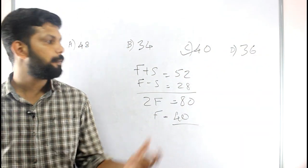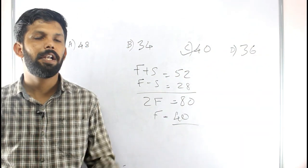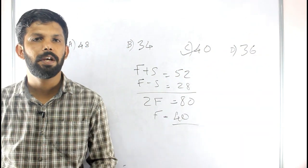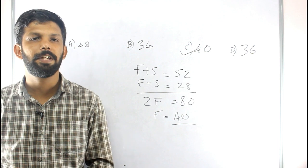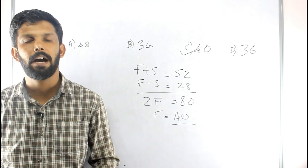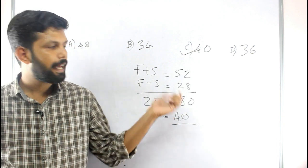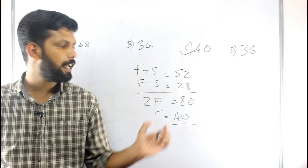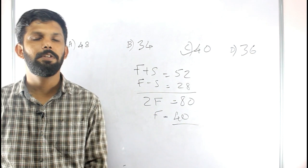The age of the father is 40, option C. As you can see, we have a very simple formula for age problems. If we have the same type of formulae, you can use them to answer in one step.